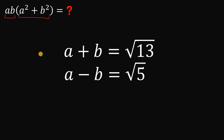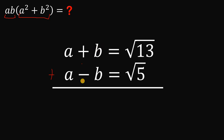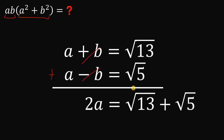One way to answer this question is to solve for the value of a and the value of b. To solve for a, we add the two equations. When we add them, b cancels out, giving us 2a equals the square root of 13 plus the square root of 5. Dividing both sides by 2, the value of a is square root of 13 plus square root of 5, all over 2.